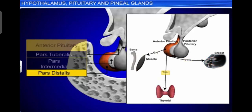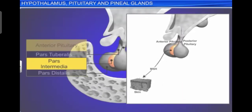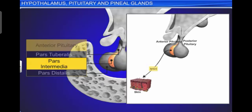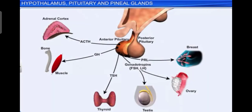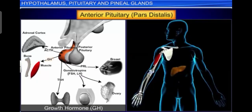The pars distalis produces different types of hormones: growth hormone (GH), prolactin (PRL), thyroid-stimulating hormone (TSH), adrenocorticotrophic hormone (ACTH), luteinizing hormone (LH), and follicle-stimulating hormone (FSH). The pars intermedia secretes only one hormone called melanocyte-stimulating hormone (MSH). However, in humans the pars intermedia is almost merged with the pars distalis.